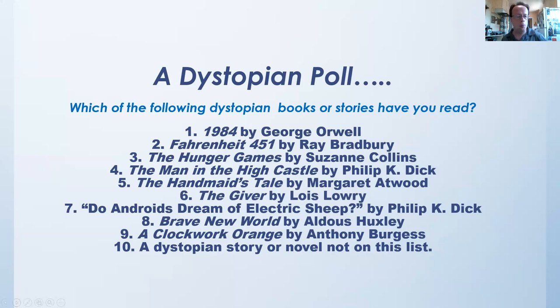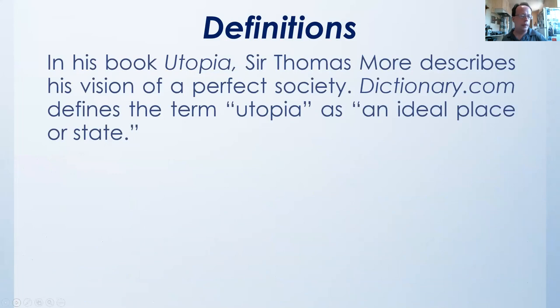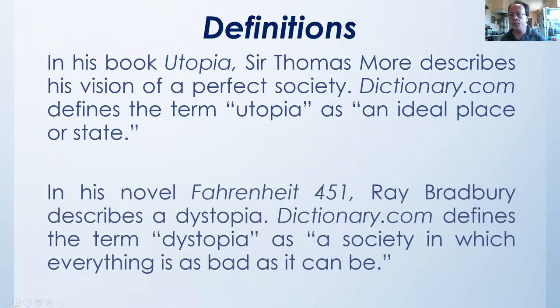So the question is, what is a dystopian story or novel? Something can be considered dystopian if it fits this definition. But let's talk first about the opposite of a dystopia, which is a utopia. According to Sir Thomas More in his book Utopia, a utopia is an ideal place or state. Sir Thomas More described an island which he called utopia, and because of that he really coined the term utopia for an almost perfect place or state. Now we get to dystopia, which has a lot more conflict and yet is a lot more interesting for the writer and often for the reader because of the conflict that arises.